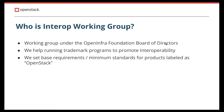Let me briefly introduce the Interop Working Group. The IWG is a working group under the OpenInfra Foundation Board of Directors. It helps the foundation to run trademark programs to promote interoperability between OpenStack deployments. In practice, it means that IWG sets base requirements by defining capabilities, code, and must-pass tests for all OpenStack products. This definition uses community resources and involvement to drive interoperability by creating the minimum standards for products labeled as OpenStack.